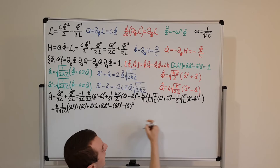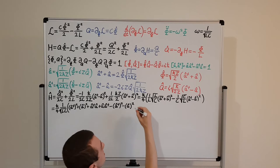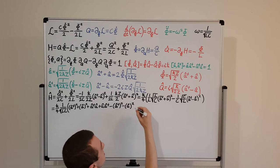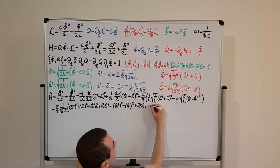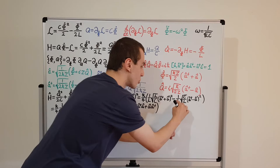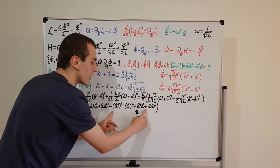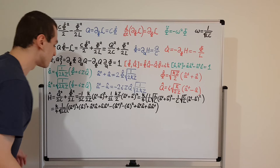Then dealing with the minus signs from the difference squared (a dagger minus a)²: we get minus a dagger squared, minus a squared. For the mixed terms, we have double minuses — a minus from the inside and a minus at the front — so these become plus a dagger a and plus a a dagger.